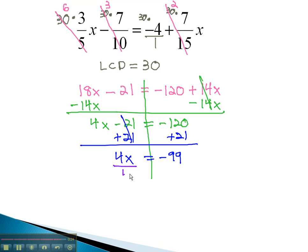Dividing both sides by 4, we'll leave our x alone. x is equal to the fraction negative 99 fourths.